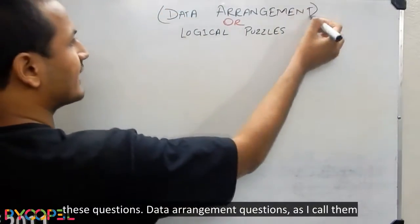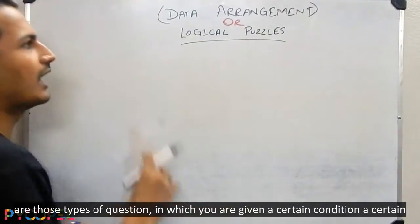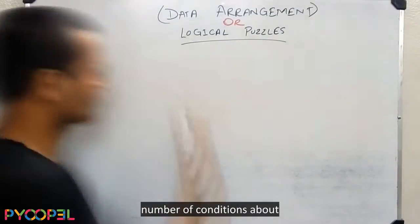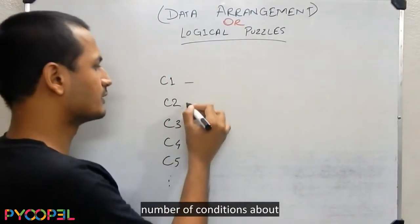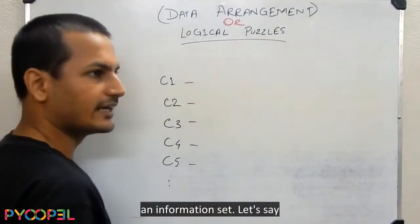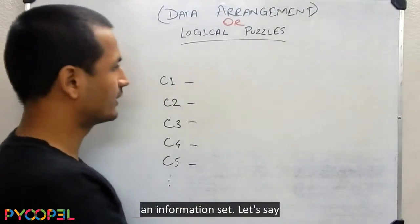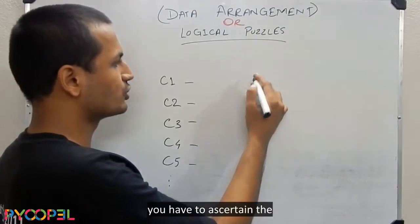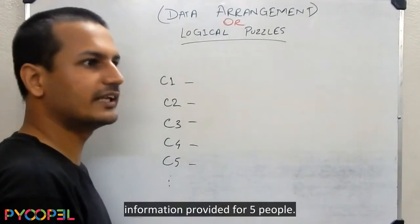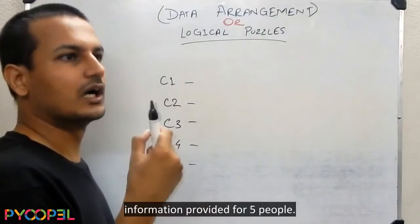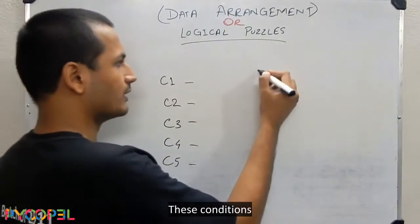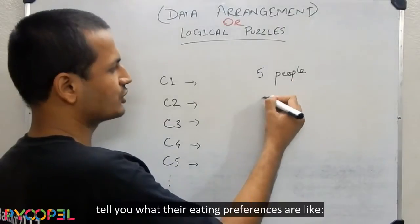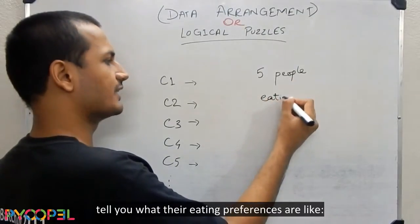Data arrangement questions are those type of questions in which you are given a certain number of conditions about an information set. For example, you have to ascertain the information provided for five people — these conditions tell you what their eating preferences are like.